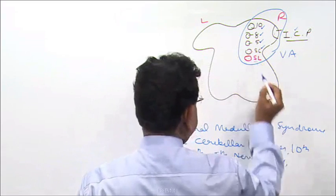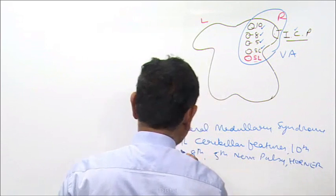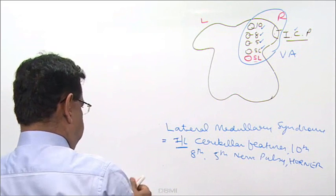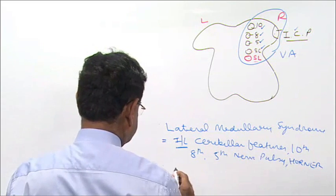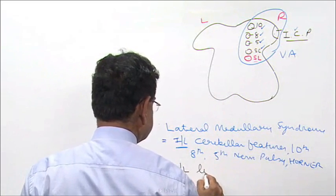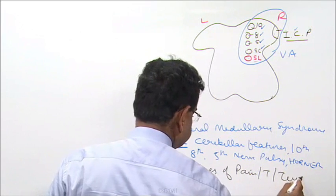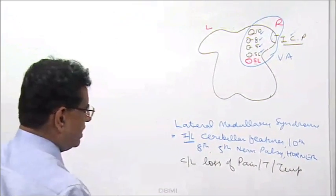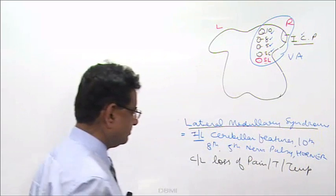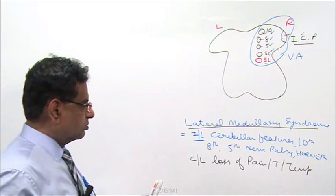Horner syndrome is ipsilateral — same side. But contralateral loss of pain, touch, and temperature. This is lateral medullary syndrome. Write it down: lateral medullary syndrome.